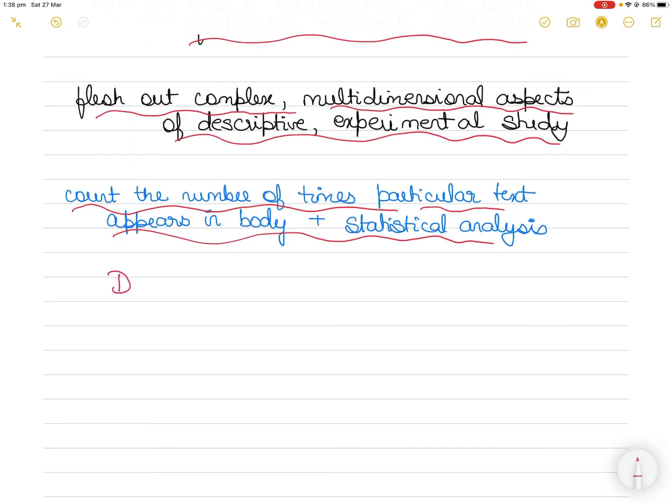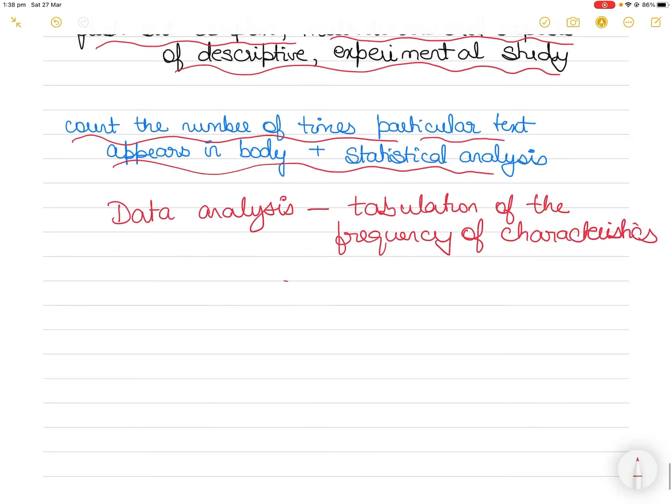The method of data analysis in this kind of research method is the tabulation of the frequency of the characteristic - how many times does the characteristic appear in a body of material.